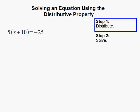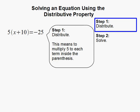The first step is to distribute. This means to multiply 5 to each term inside the parentheses: 5 times x and 5 times 10.